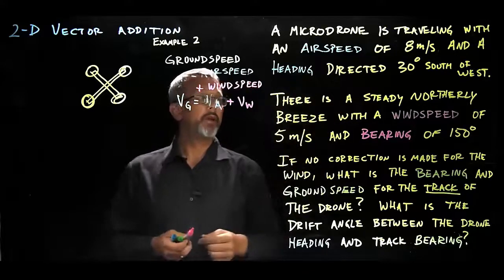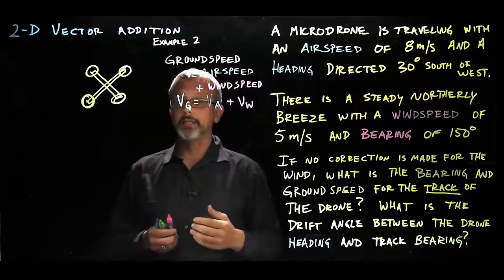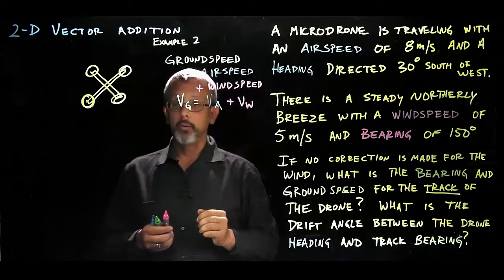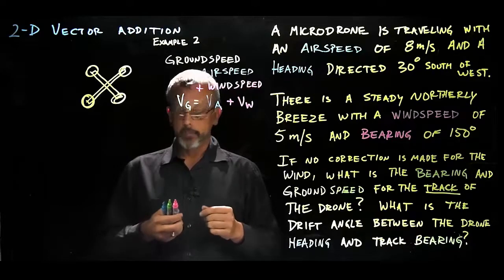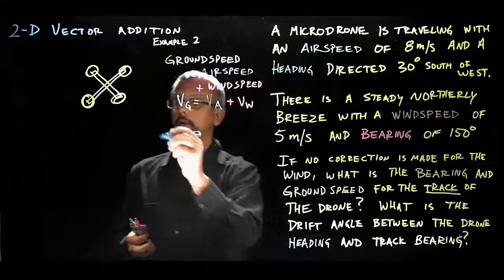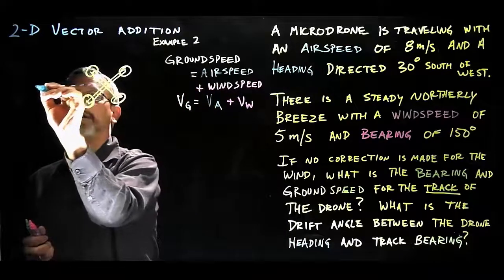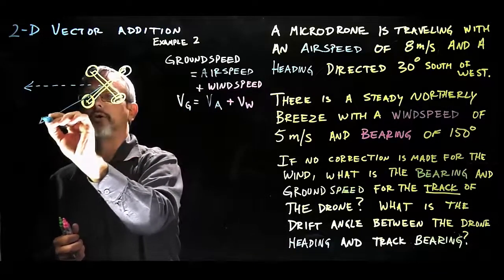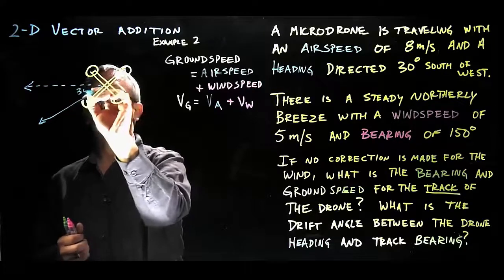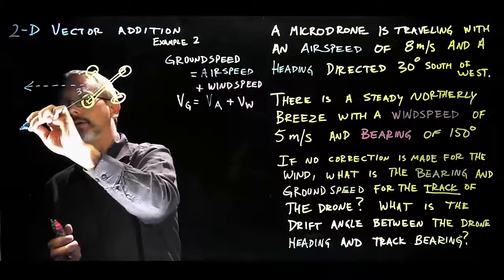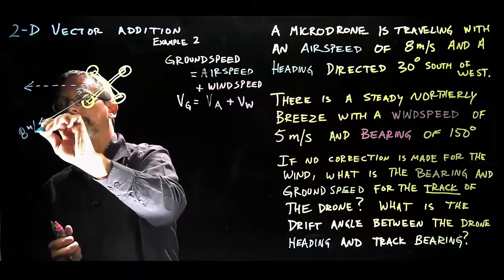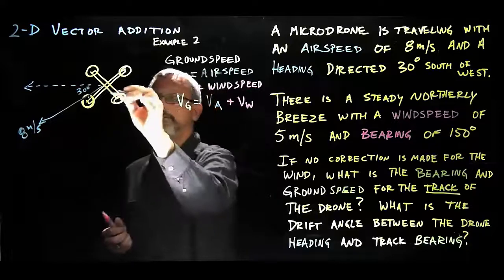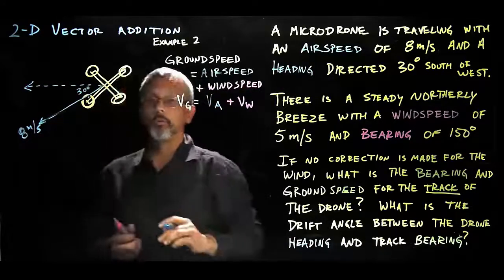We have an airspeed of 8 meters per second with a heading directed 30 degrees south of west. Notice that is a little different than a standard heading, which is typically measured from north in a clockwise direction. In this case, we are measuring 30 degrees south of west, so I'll go ahead and sketch that, defining west as being to our left.